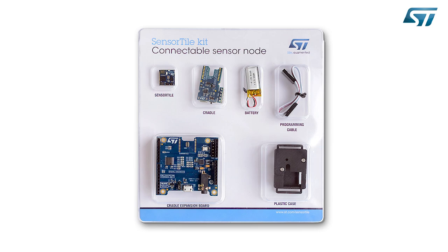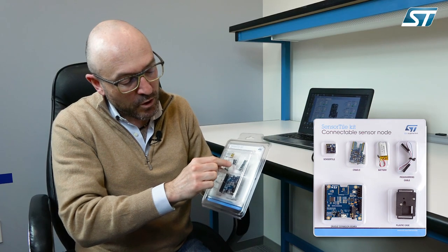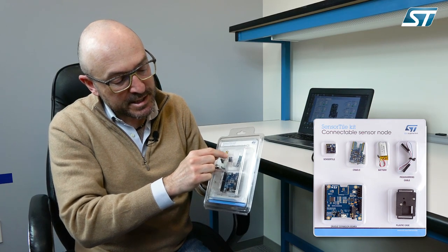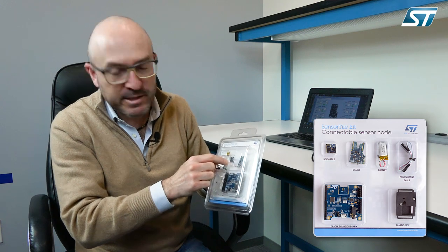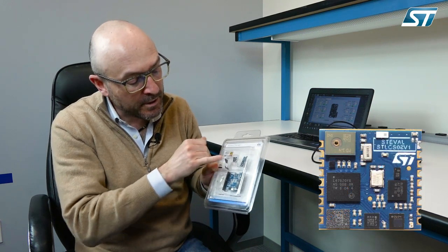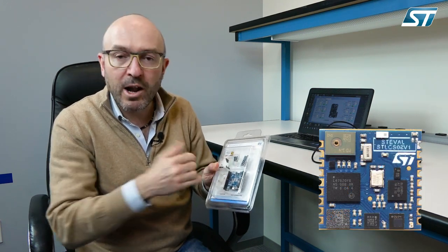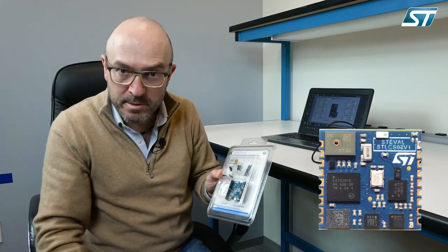What I'm going to present to you is a graphical user interface called Unicleo, which is now available also for the sensor tile. The sensor tile is a very small implementation — this module here is 30 mm x 30 mm — and you have a lot of sensors embedded.